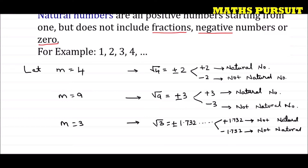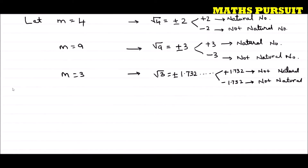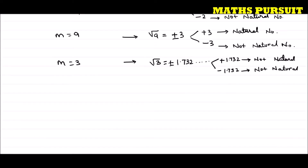From these examples — when m equals 4, 9, and 3 — we got some numbers that are natural numbers and some that are not. So we can conclude: the question asks whether every point on the number line is of the form root m where m is a natural number. Our concluding answer is that the given statement is false.